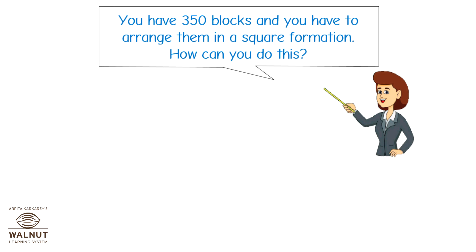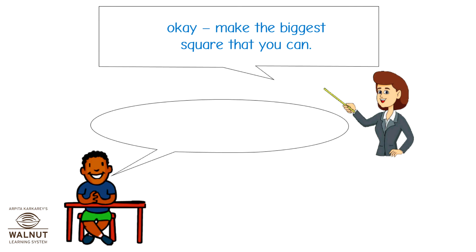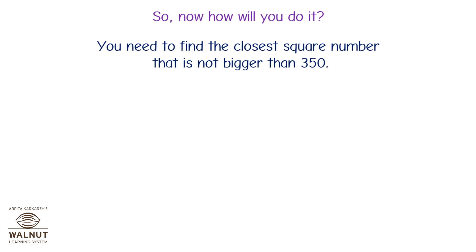You have 350 blocks and you have to arrange them in a square formation. How can you do this? But 350 is not a perfect square, so we can't do that exactly. Make the biggest square that you can — that is possible. You need to find the closest square number that is not bigger than 350; that will be the side of the square.